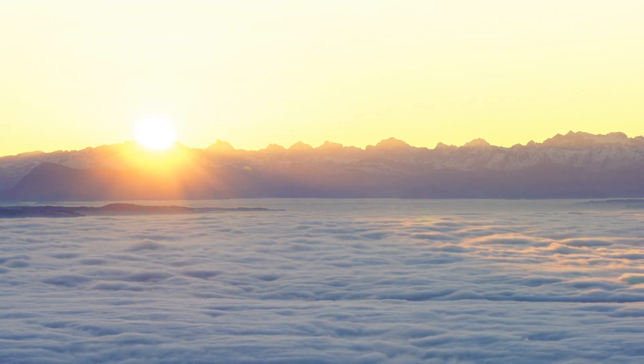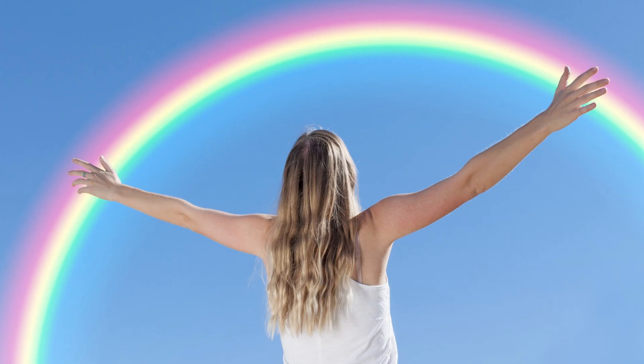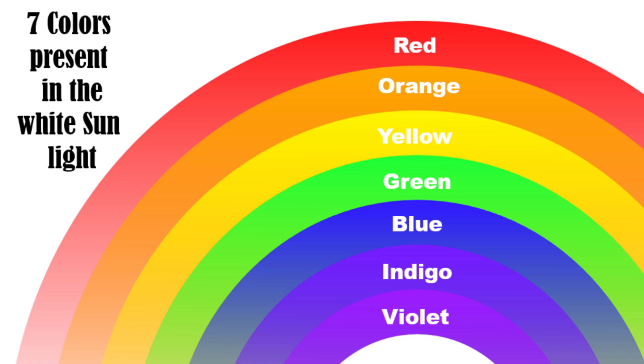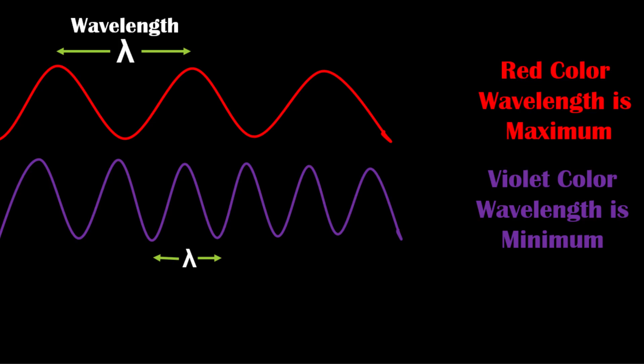White sunlight is a mixture of seven colors that we see in the rainbow. These seven colors are violet, indigo, blue, green, yellow, orange, and red. Out of these seven colors, the wavelength of red color is maximum while the wavelength of violet color is minimum.